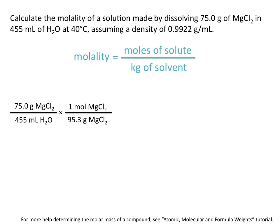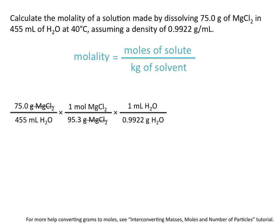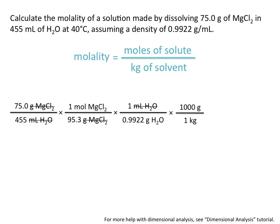Let's start by converting magnesium chloride to moles using the molar mass. This allows us to cancel out grams and leaves us with moles of magnesium chloride. We can then convert milliliters of H₂O to grams of H₂O using the given density value, canceling out milliliters and leaving us in grams of H₂O. Then, to convert from grams to kilograms, we know there are 1000 grams in every 1 kilogram, which cancels grams and leaves kilograms of H₂O. When we plug these numbers into our calculator, we get a molality of 1.74.